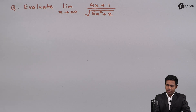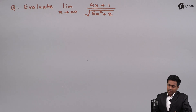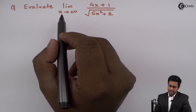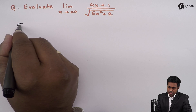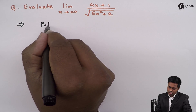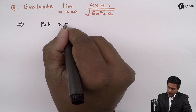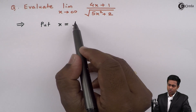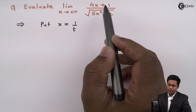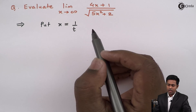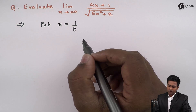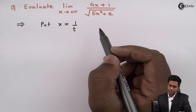Whenever we get a limit as x tends to infinity, we substitute the given variable as 1 upon t. So here, since x tends to infinity, I will start the solution by putting x equal to 1 upon t. This shifts the problem from the x domain to the t domain, and we need to find the limit in the t domain.